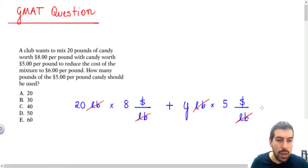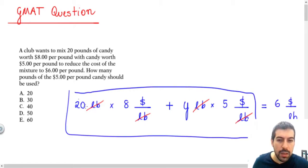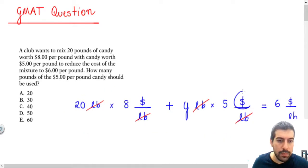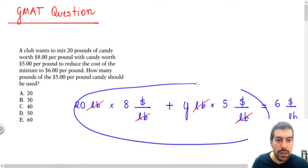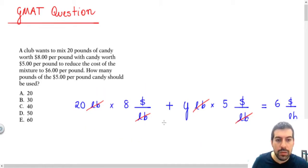I need to consider that this should be equal to $6 per pound. But as you can see, in the left side, I just have the cost of the mixture. I don't have this kind of unity in the left side. How can we do that?